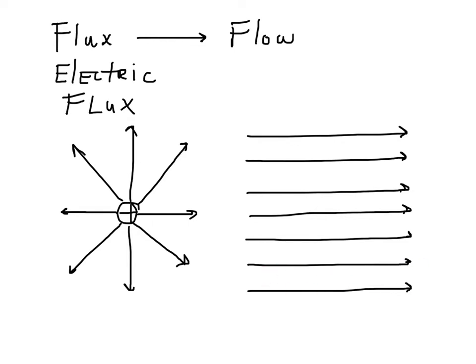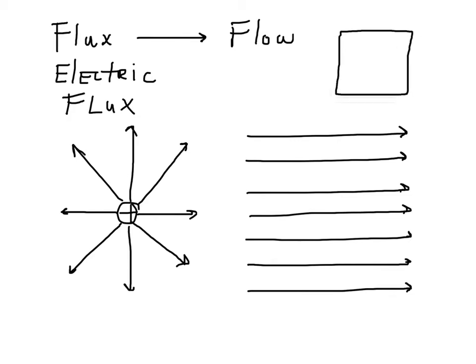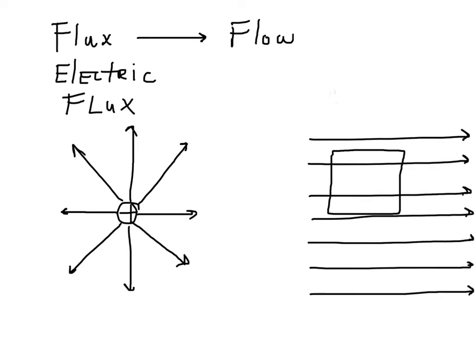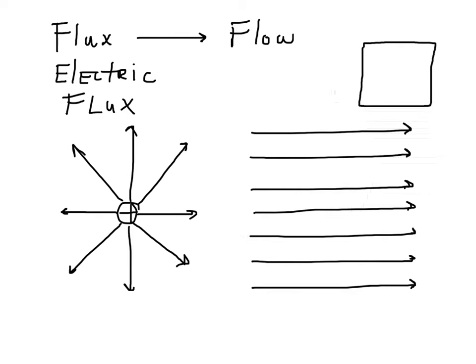If we want to talk about the amount of flux received, there are two factors to consider: the intensity of the flux — represented by how close the lines are together — and the area over which you're collecting the flux. Let's think of an example: a square with side s, so the area is s². Imagine this as a solar collector placed in the sun. How much sunlight falls on the collector depends on the intensity of the sunlight.